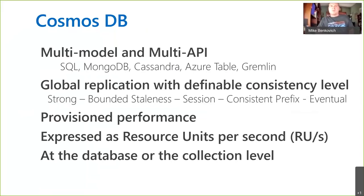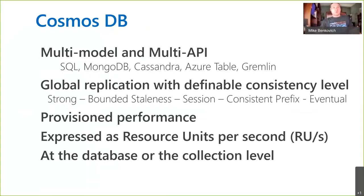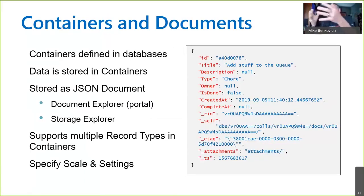The nice thing about Cosmos is it allows us to do replication at a consistency level defined by the application needs. When we talk about consistency levels, there are different levels — from strong, where data has to be updated in every environment, to eventual, which is useful if you're running a globally disparate application. You're paying for performance in Cosmos — resource units — and you get an estimate of how many RUs are used for each query, so you can provision that much performance for your application.